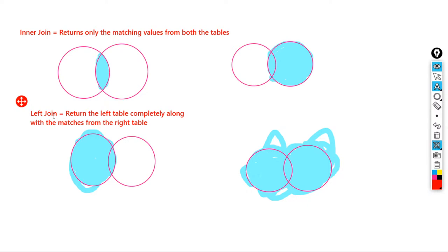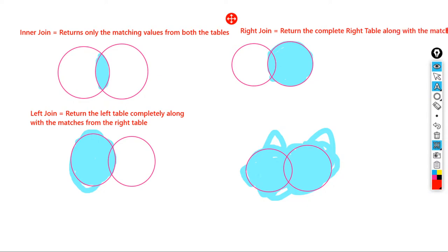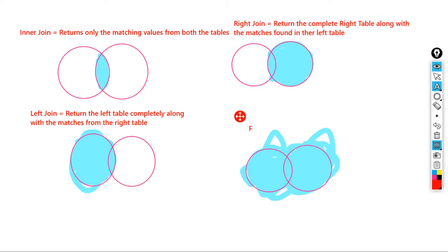Right join does exactly the same thing on the right side. It returns the complete right table first, then also returns the values along with the matches found in the left table. A full join — also called an outer join — simply returns values from both tables; whatever values are present it returns everything.